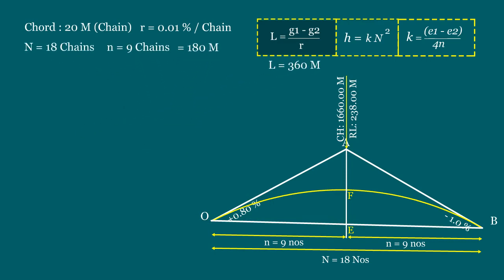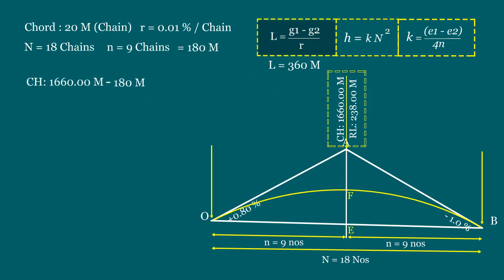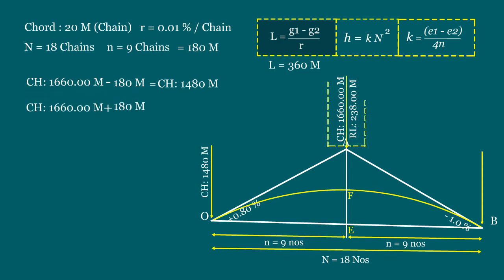Now we will fix the tangent points. The chainage of the intersection point is 1,660 meters. So the chainage of the first tangent point equals 1,660 meters minus 180 meters, which equals 1,480 meters. Similarly, the chainage of the second tangent point equals 1,660 meters plus 180 meters, which equals 1,840 meters.